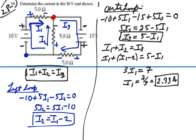That is our current in that branch that has the 10 volt EMF in it. So that's our answer.